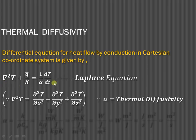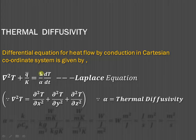In this equation, we have the rate of heat flow by conduction. The next term takes into consideration the internal heat generation within the body, and the right-hand side represents the rate of change of the internal energy of the system. So due to conduction and internal heat generation, the changes in internal energy are represented by that term. dT/dt is how temperature changes with respect to time, indicating whether it is a steady state or unsteady state condition.